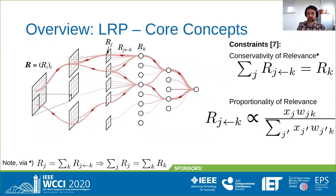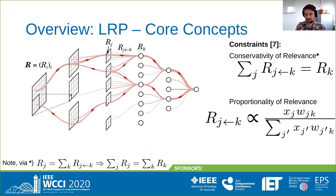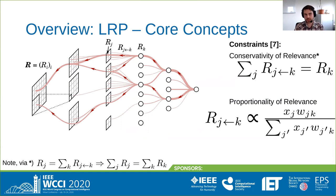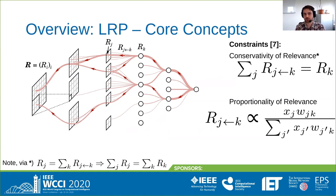LRP is a modified backpropagation method and is defined as a set of constraints. The first constraint is conservativity, meaning the relevance backpropagated from one neuron to its input neurons is conservative — no relevance is injected or lost. The second constraint is proportionality, meaning the relevance decomposed should be proportional to the activation of an input neuron with which it contributes to the output neuron.